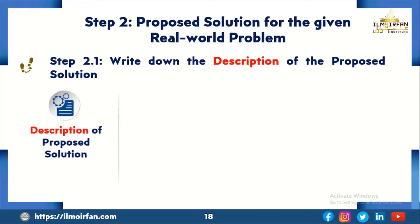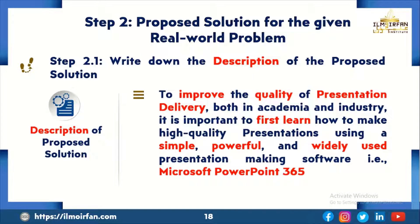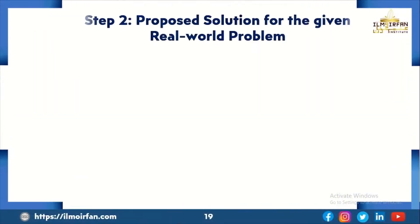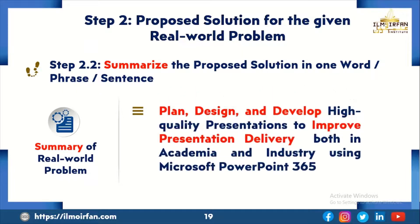The second step is the proposed solution for the given real-world problem. The first sub-step of step 2 is to write down descriptions of the proposed solution. The description is: to improve the quality of presentation delivery both in academia and industry, it is important to first learn how to make high-quality presentations using a simple, powerful and widely-used presentation software, i.e., Microsoft PowerPoint 365. The second sub-step is to summarize the proposed solution: improve the quality of presentation delivery both in academia and industry using Microsoft PowerPoint 365.